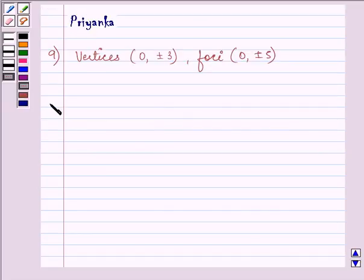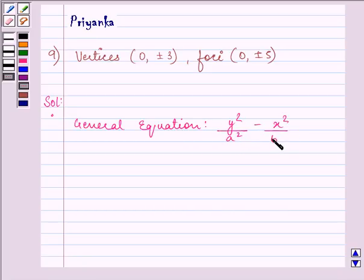Now, the general equation of the hyperbola is y²/a² - x²/b² = 1, since the vertices and the foci lie on the y-axis.